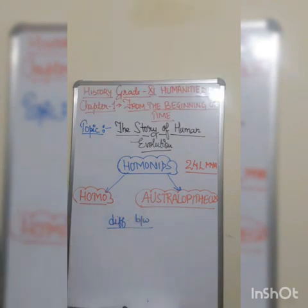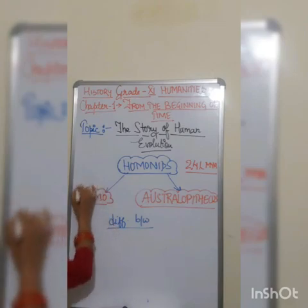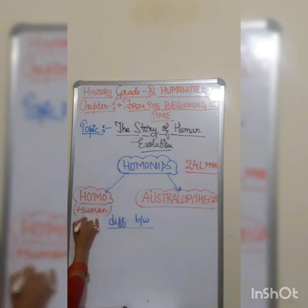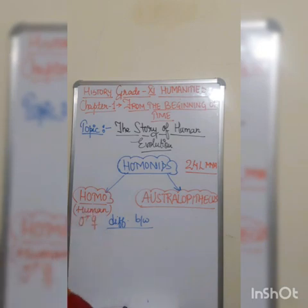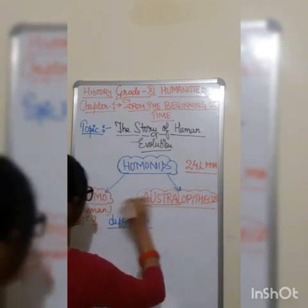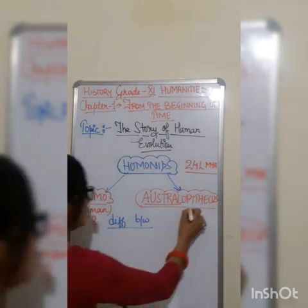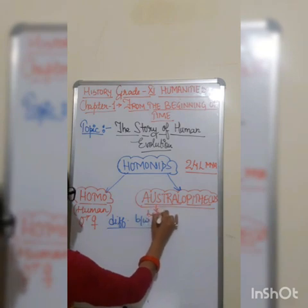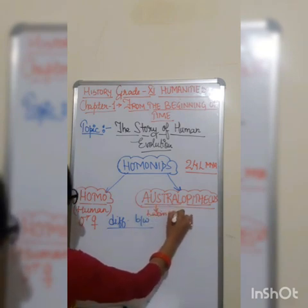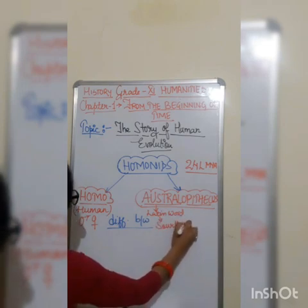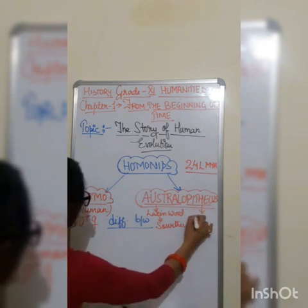Before that, we need to understand what 'homo' means. Homo means human — both male and female. Now the meaning of australopithecus: this word is divided into two parts — 'austro' and 'pithecus.' The word 'austro' is taken from Latin, which means southern, and 'pithecus' means ape, taken from Greek.